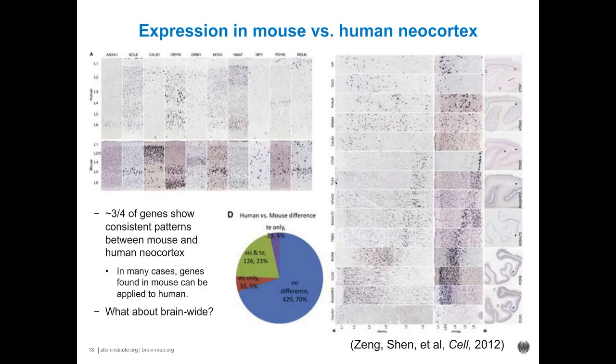The conserved genes include those with high expression in particular layers of cortex in both mouse and human, and interneuron-related marker genes that again show conserved expression between species. On the other hand, about a quarter of genes in one or both of two cortical regions show distinct patterns between species — some because they were in different layers, in other cases there was an added layer, or they were in multiple cell types, or in rarer cases they switched from excitatory to inhibitory neuron markers.